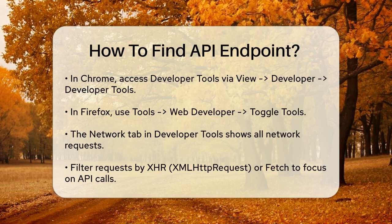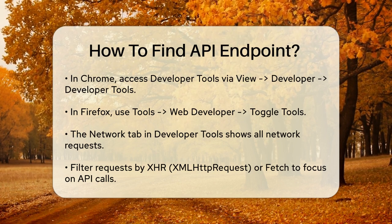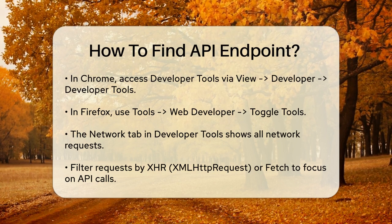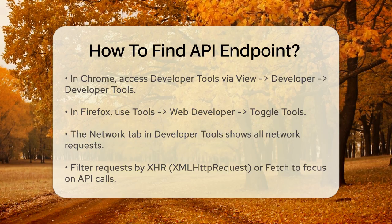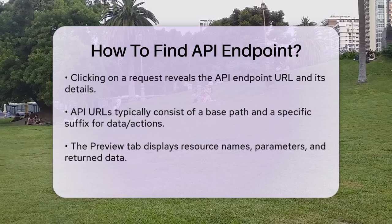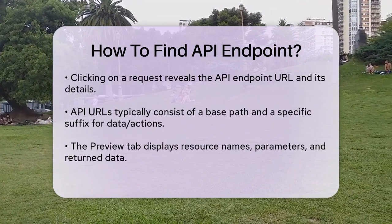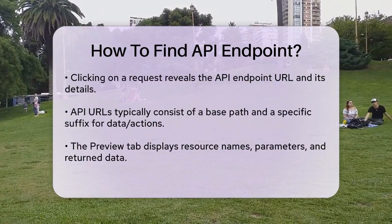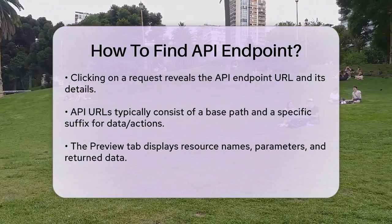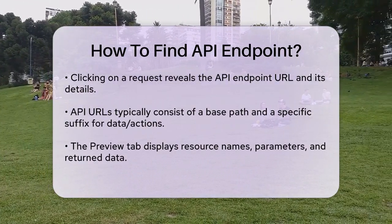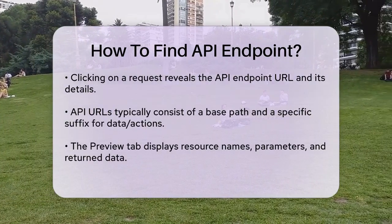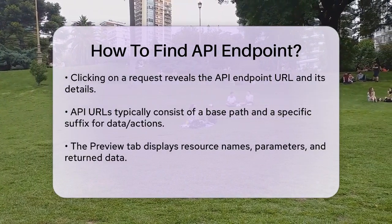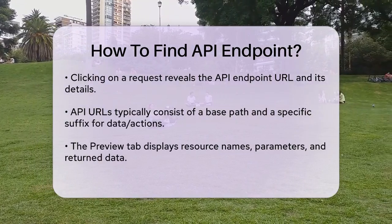As you inspect these requests, you'll see the URL of the API endpoint. This URL often includes a base path and a specific suffix that indicates what data or action is being requested. For instance, the GitHub API endpoint for retrieving information about a specific repository.